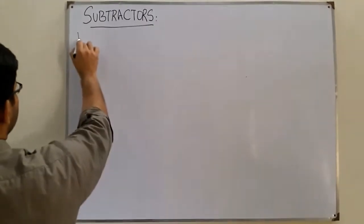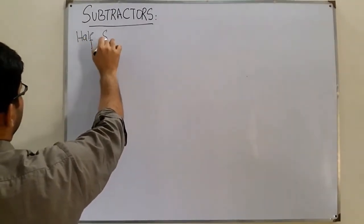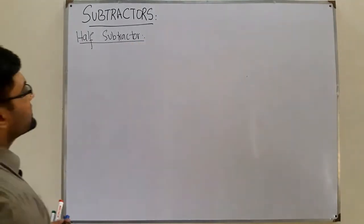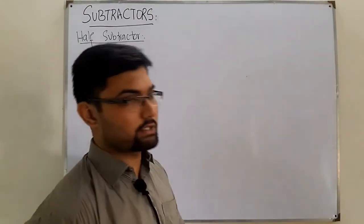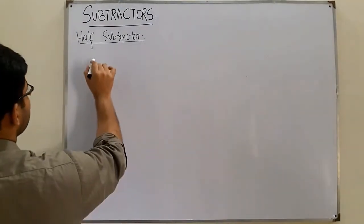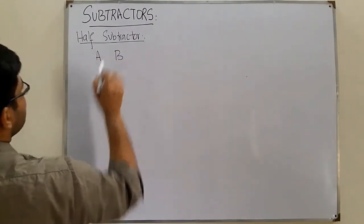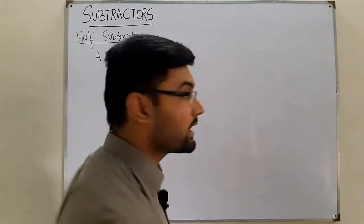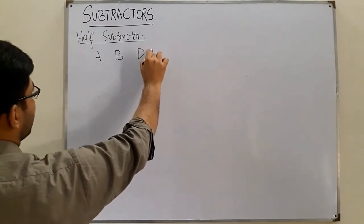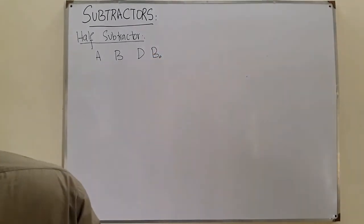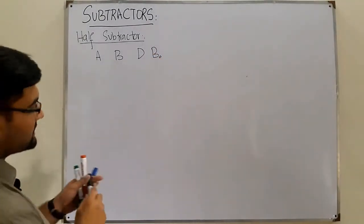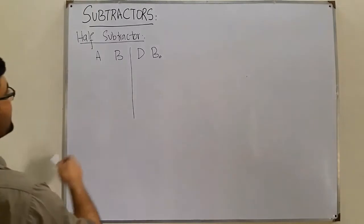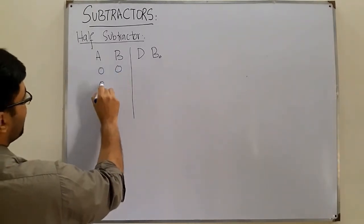The half subtractor does subtraction within two bits. We have two inputs A and B. While performing subtraction we can have either a difference or a borrow — two outputs. The borrow is represented by B output.